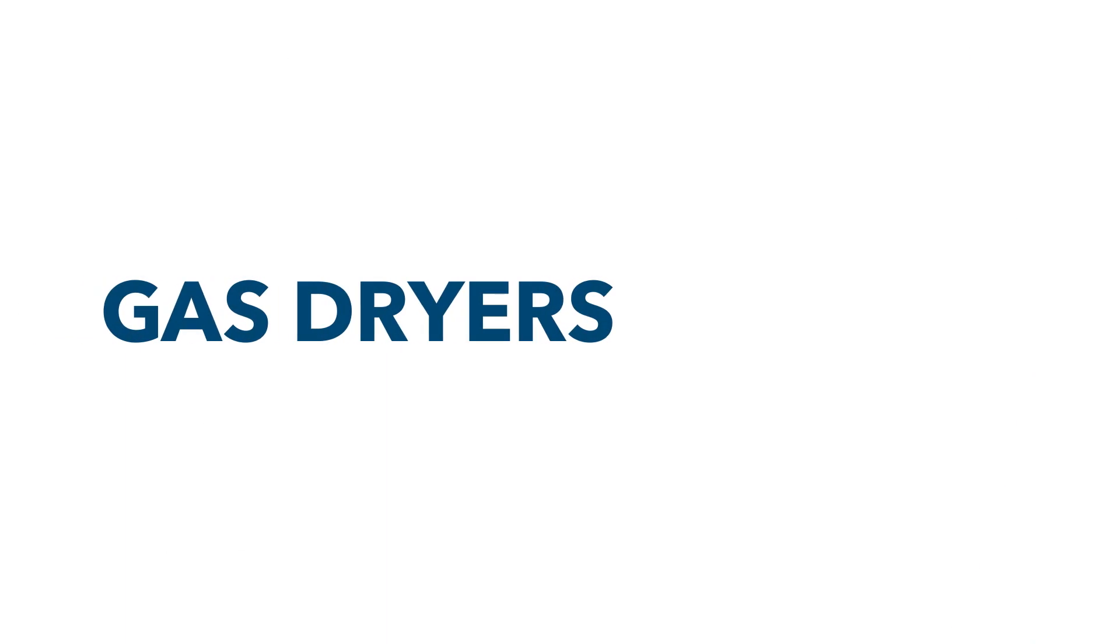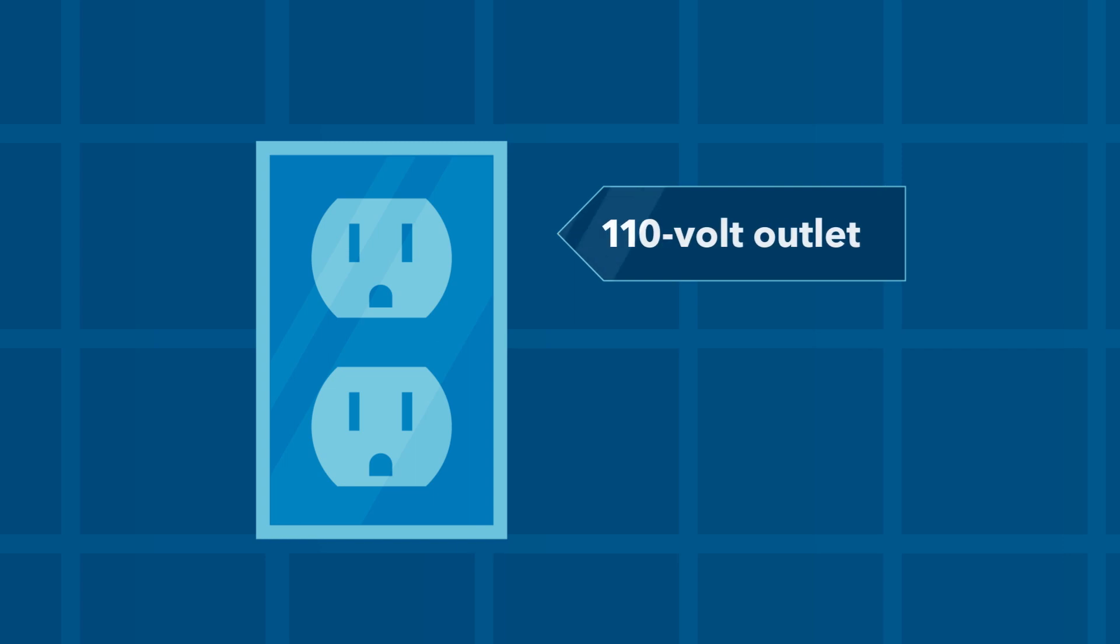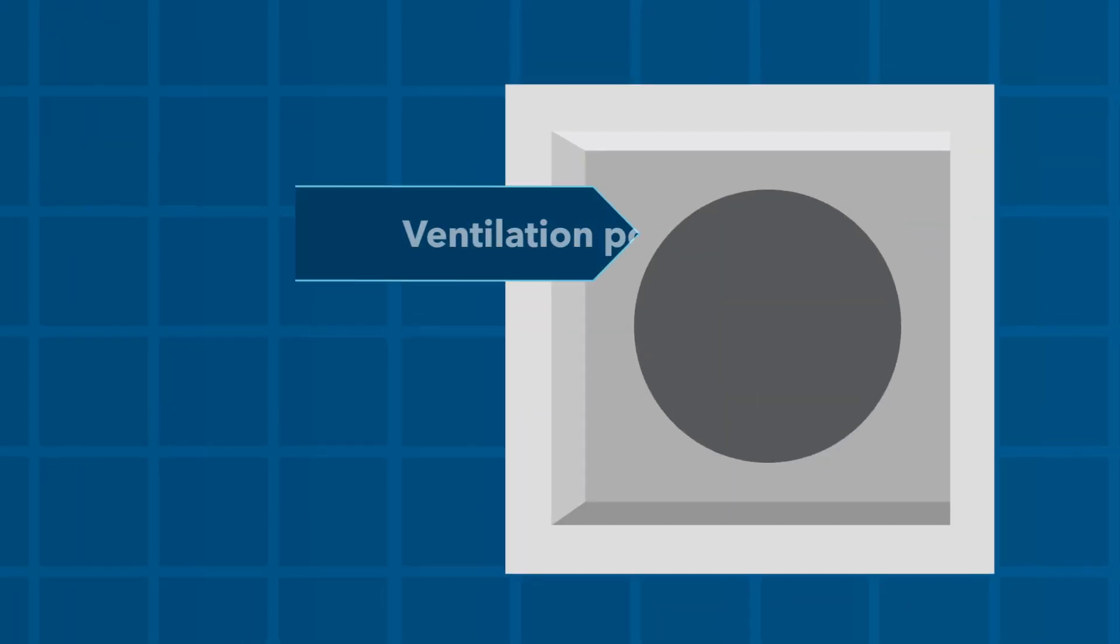For gas dryers, you'll need a gas shutoff valve positioned behind the appliance, a three-prong 110-volt electric outlet, and a ventilation port.